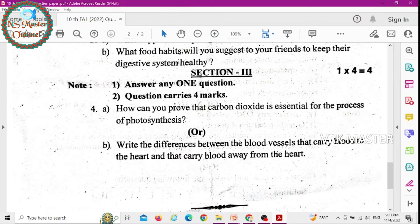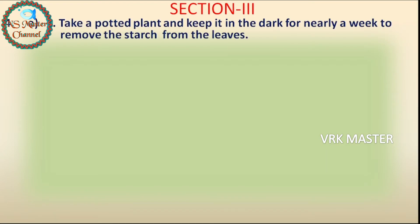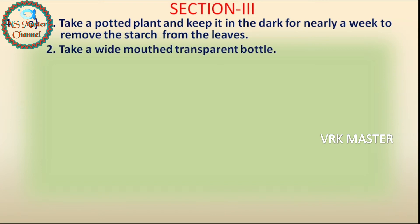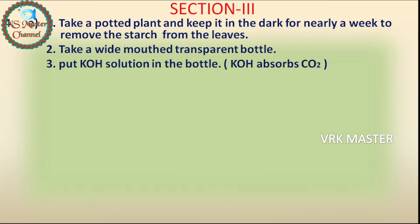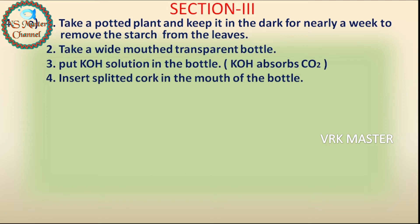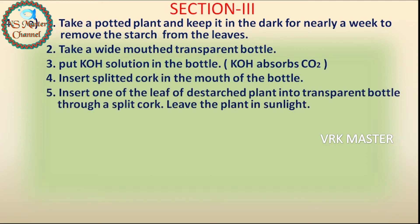Section three — four marks questions. Question four (a): How can you prove that carbon dioxide is essential for photosynthesis? Answer: Take a potted plant and keep it in the dark for nearly a week to remove starch from the leaves. Take a wide-mouth transparent bottle. Put KOH solution in the bottle — KOH absorbs CO2. Insert a split cork in the mouth of the bottle, then insert one leaf of the destarched plant into the transparent bottle through the split cork. Leave the plant in sunlight.